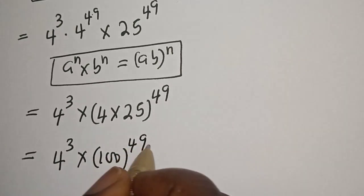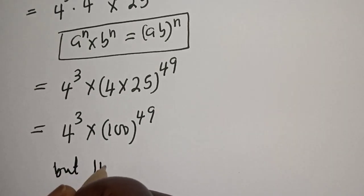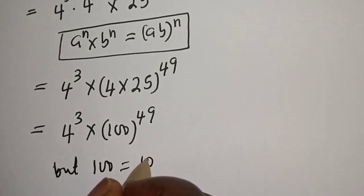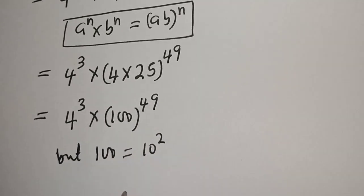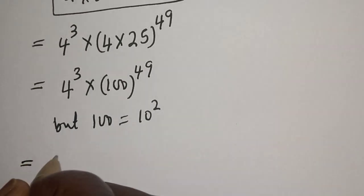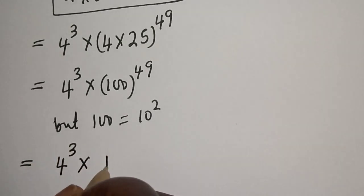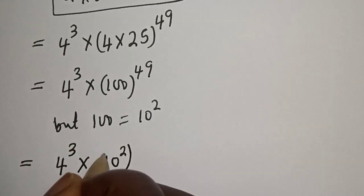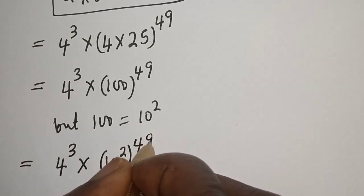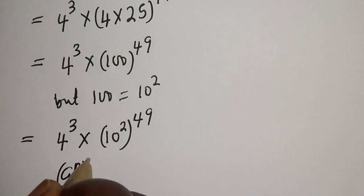But 100 is equal to 10 squared, so this becomes 4 raised to power 3 multiplied by 10 squared raised to power 49, which equals 4 raised to power 3 multiplied by 10 raised to power (2 times 49).